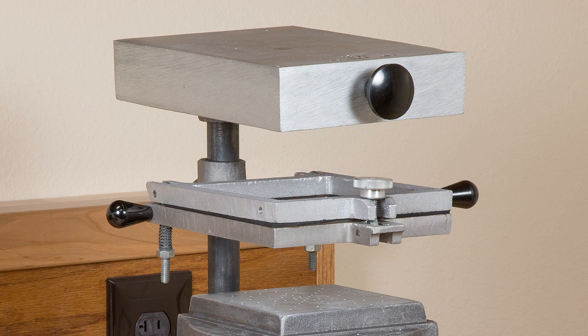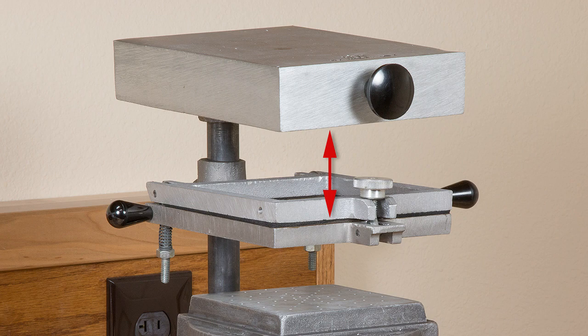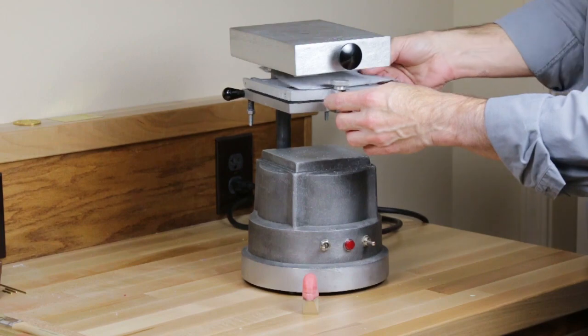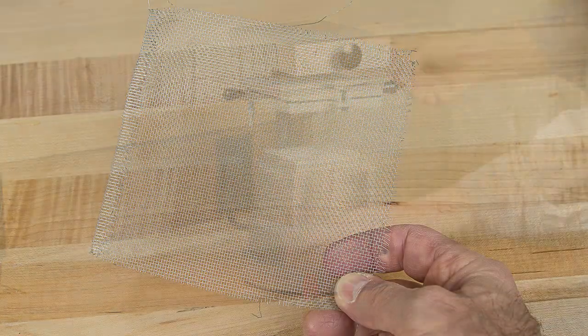The rate at which the material is heated is critical and is controlled by altering the distance between the material and the heating element. A piece of stainless steel screen is placed on top of the frame to help even out the heat.